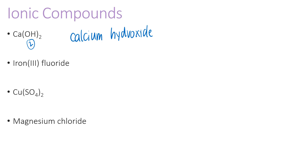The next example is iron(III) fluoride. Iron is a transition metal in the middle of the periodic table that can have multiple charges. The Roman numeral three is not telling you there are three irons — it tells you the charge on the iron is plus three. Fluoride was originally fluorine, which forms a minus-one charge. So the formula, when balanced, is FeF₃. We need three fluorines because they each have a minus-one charge to balance the plus-three on the iron.